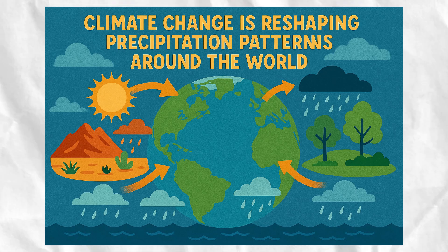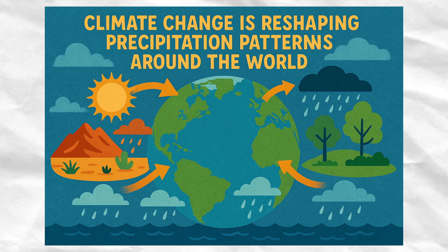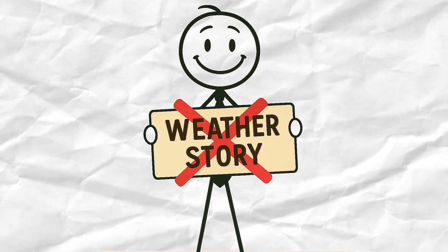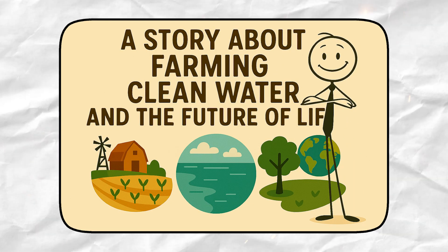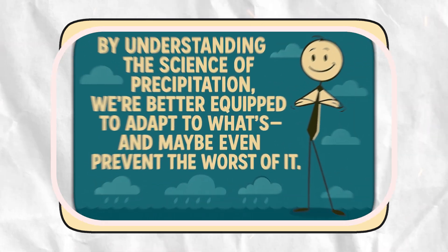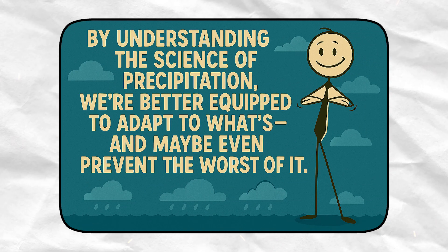In short, climate change is reshaping precipitation patterns around the world. And it's not just a weather story. It's a story about farming, clean water, and the future of life as we know it. By understanding the science of precipitation, we're better equipped to adapt to what's coming, and maybe even prevent the worst of it.